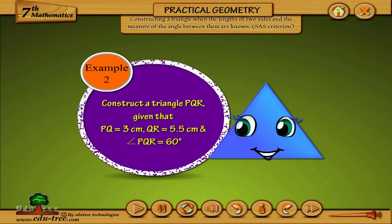Construct a triangle PQR given that PQ equals 3 cm, QR equals 5.5 cm, and angle PQR equals 60 degrees.